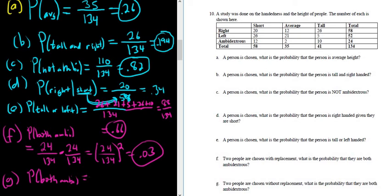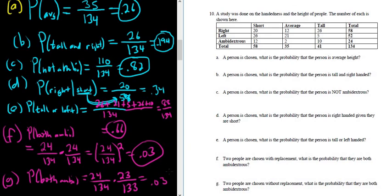We want the first one to be ambidextrous: 24 over 134. But it's without replacement, so now we're missing an ambidextrous person — it's 23 over 133. We have one less ambidextrous person and one less person overall. So 24/134 times 23/133 gives 0.031. With replacement it was 0.032 — they're almost the same, but you have to go to the third decimal place to notice a difference.